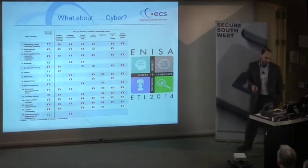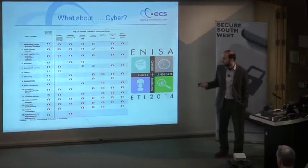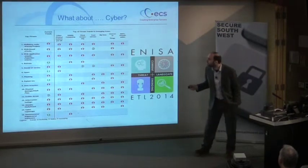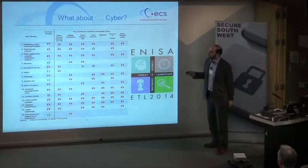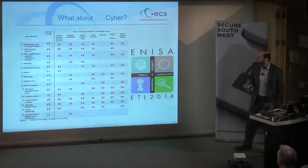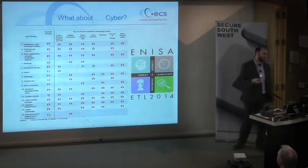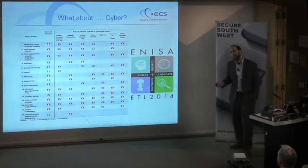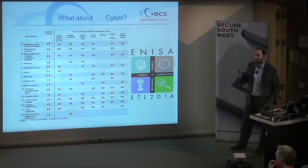We also have the annual ENISA Threat Landscape Report produced by this European agency. The top threats identified are mostly technical — for example, the number one threat is malicious code: worms, trojans, and web-based threats. They also try to map these threats to emerging areas such as cyber-physical systems, mobile computing, big data, and the Internet of Things. The interesting part is that almost everything is growing, and we expect this trend to continue. The threats are increasing in sophistication and occurrence, and we have to do something about it.